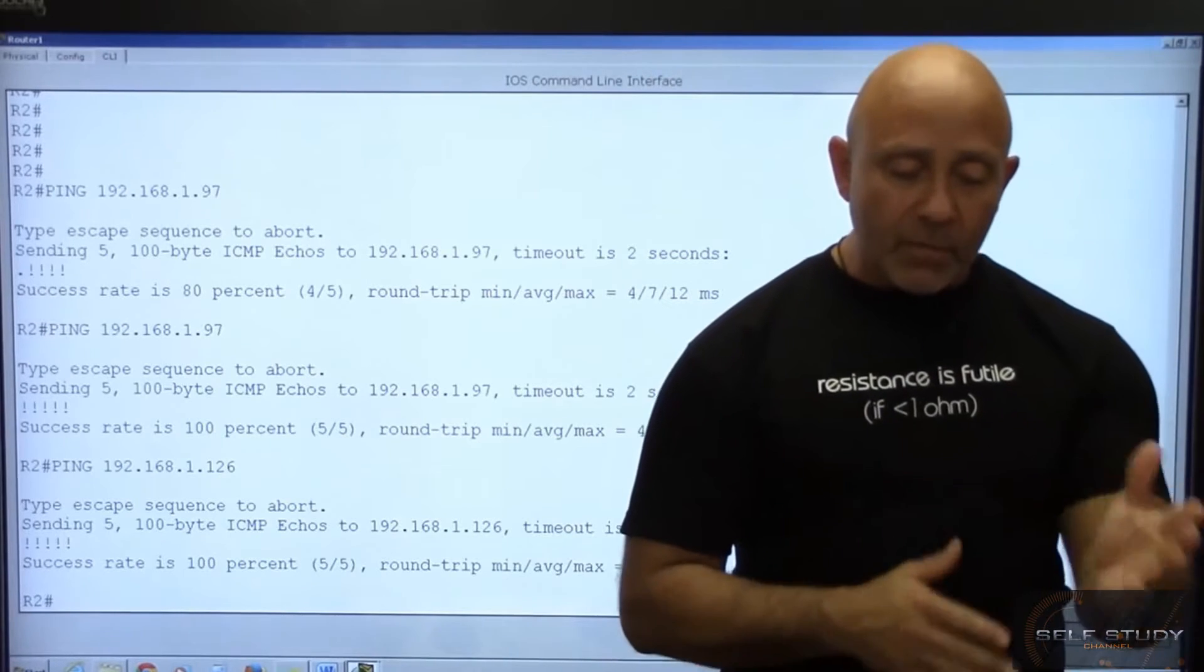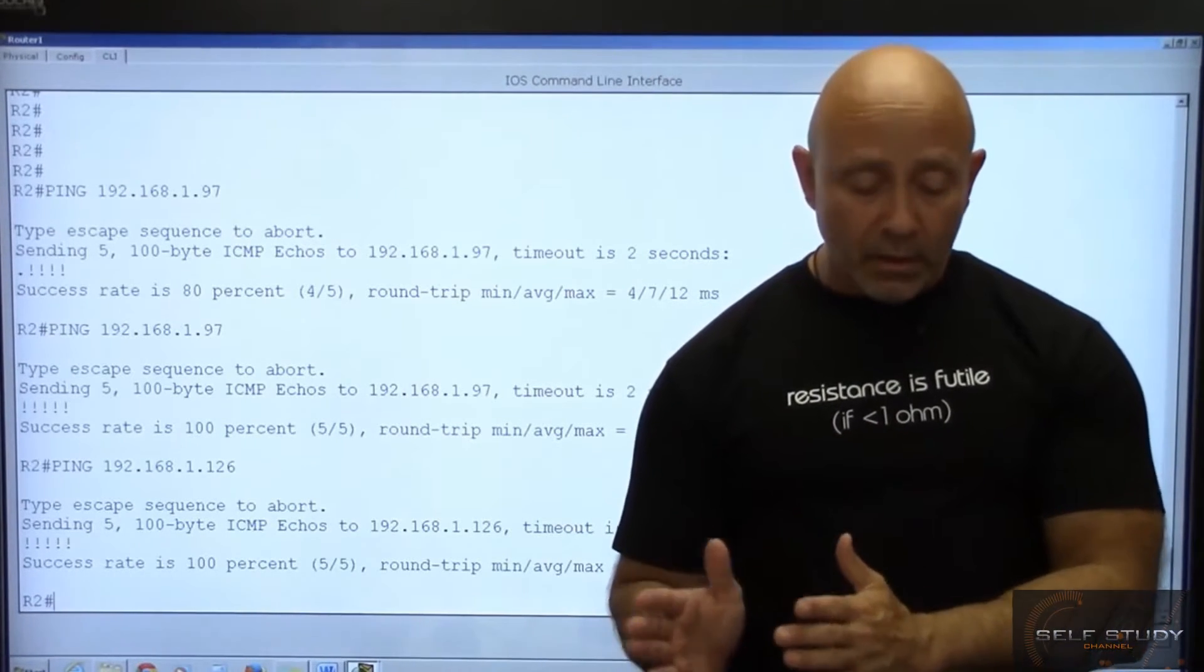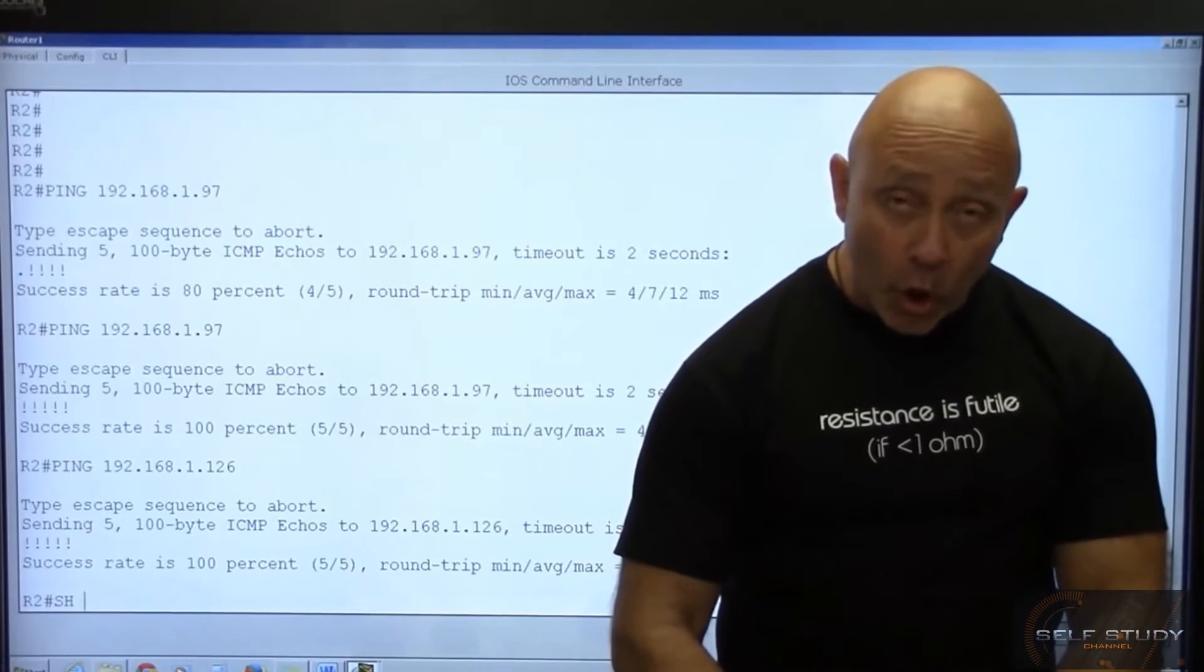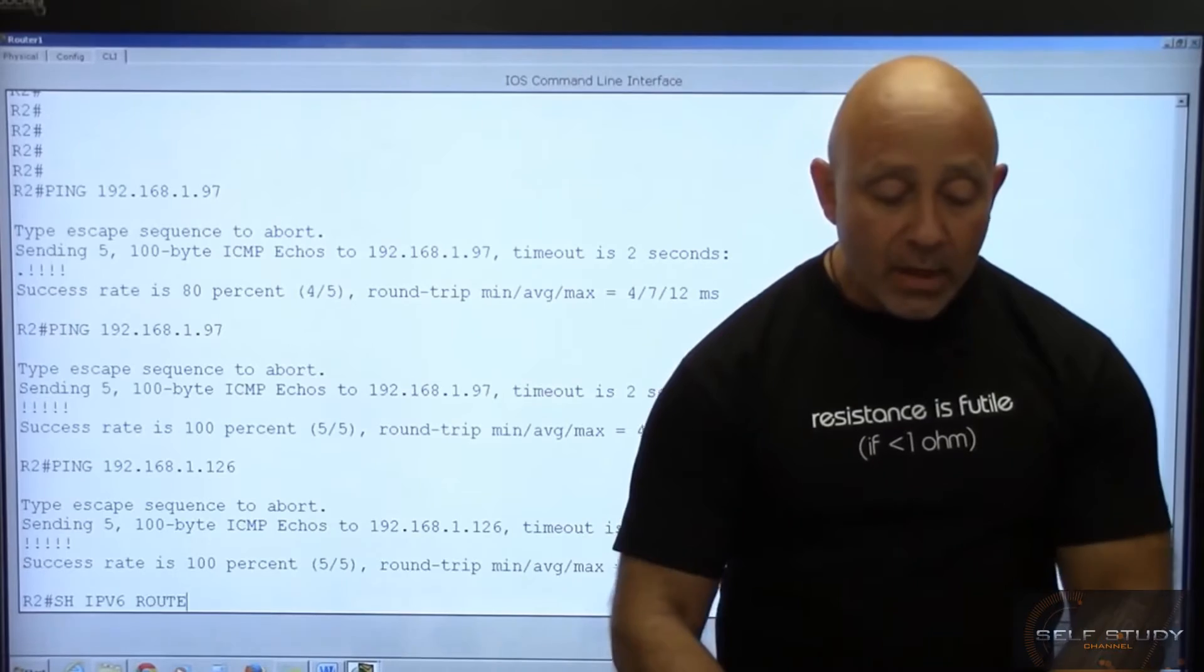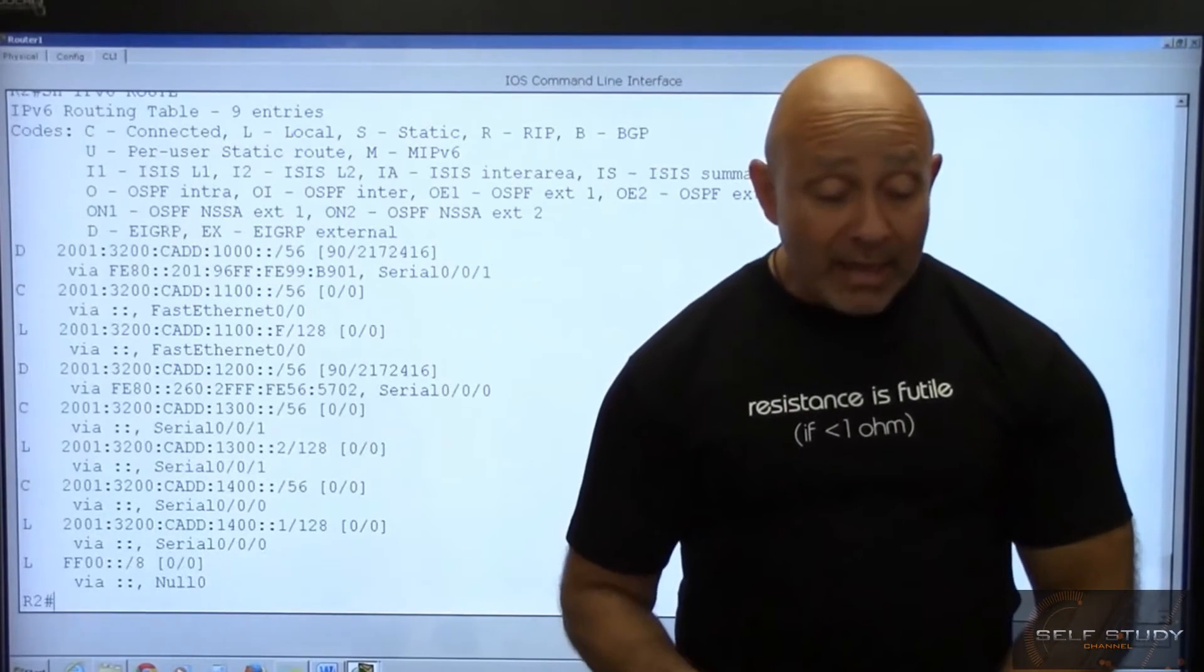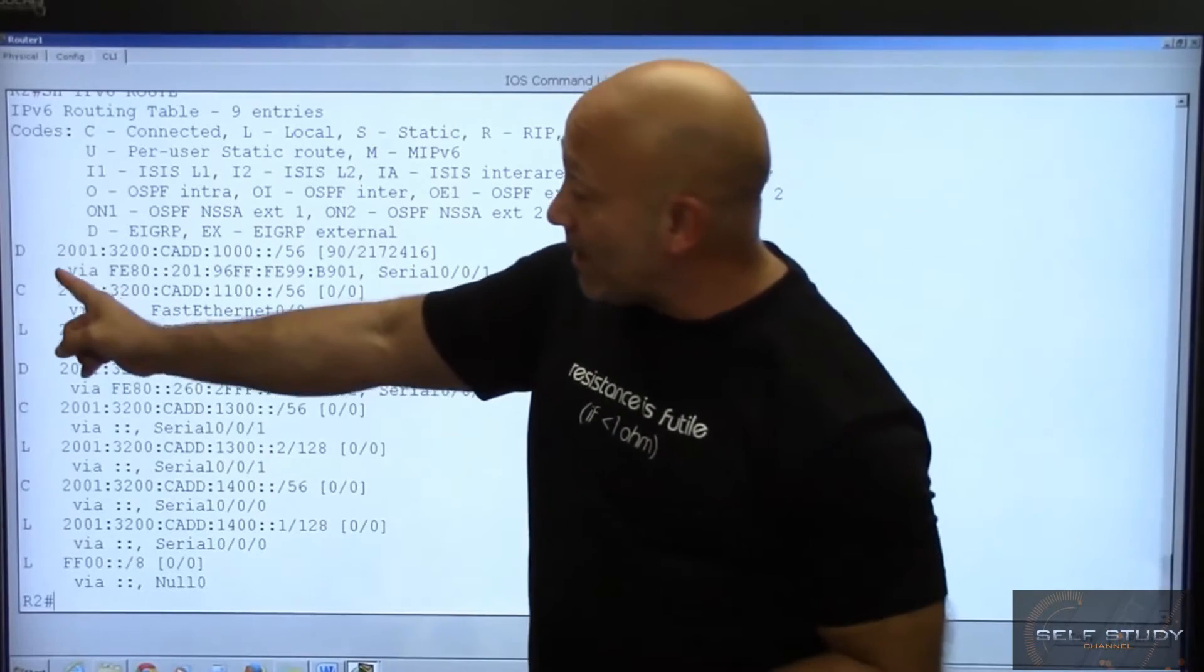So with dual stacking you see that you have IPv4 that's actually working on your network. And if you do a show IPv6 route, you take a look at the actual IPv6 routing table.